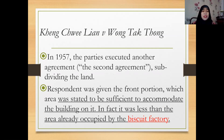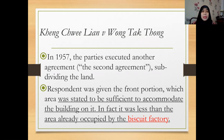Three years later, in 1957, both respondent and appellant executed another agreement, labeled the second agreement. The purpose of the second agreement was to subdivide the land, because the subdivision had not been done in the first agreement.